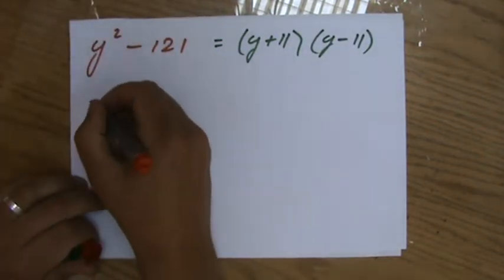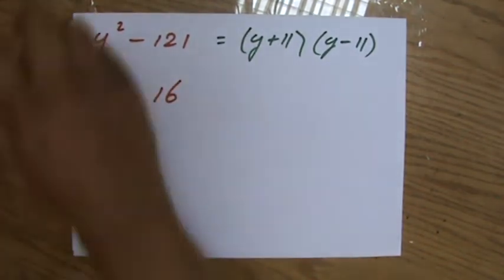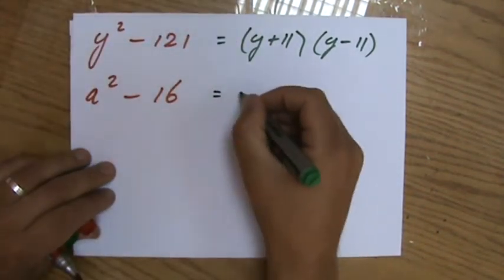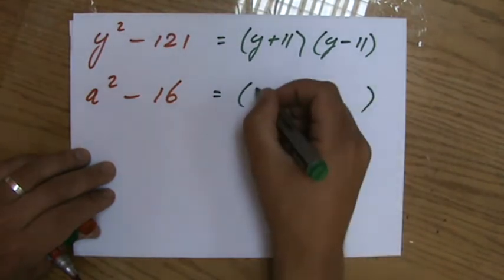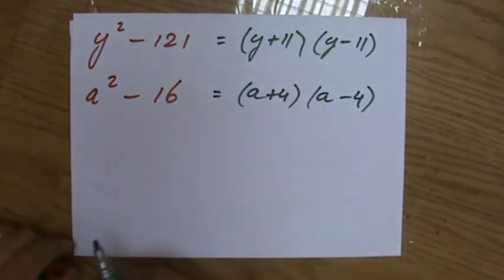And then, let me give you one normal example. a squared minus 16. Well, do I really still have to ask all those questions? a plus 4 minus 4, the difference of two squares. That's how you factorize it.